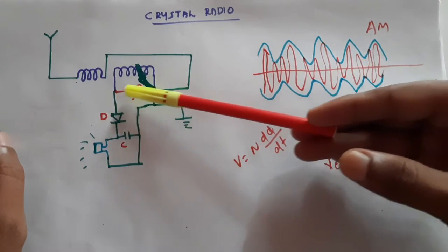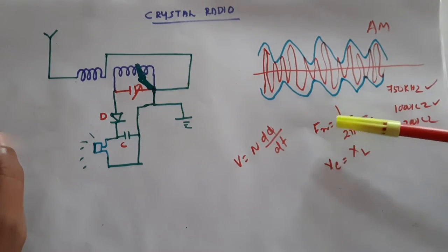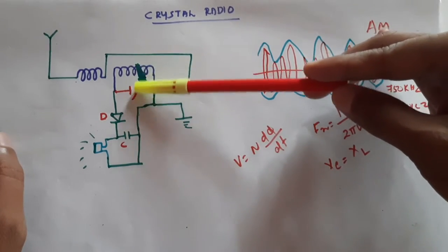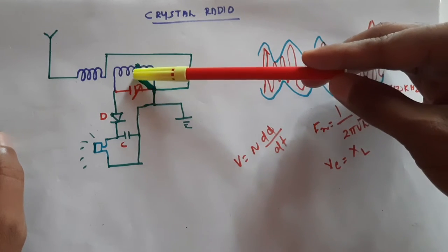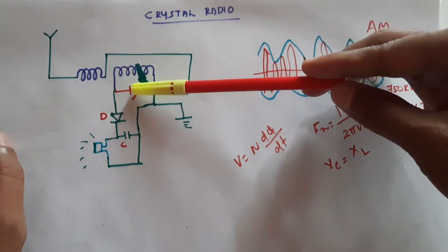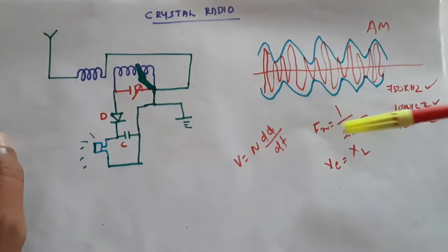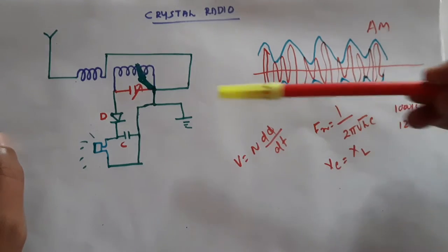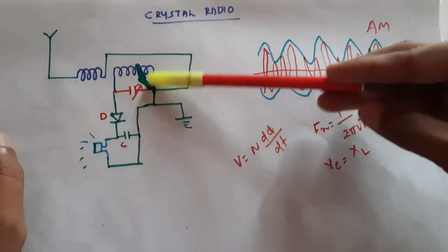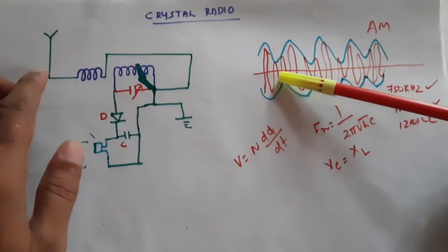We also have a capacitor and we can change the value of the capacitance. As we know, to get a resonant frequency — that is, the frequency at which we can get the maximum output — we use the equation 1 by 2π√(LC). Using this, we can select a desired frequency.